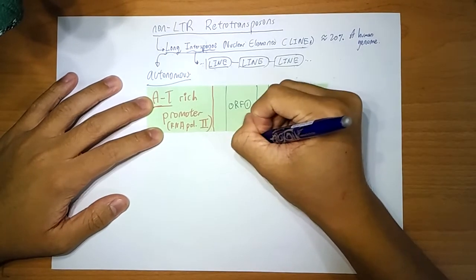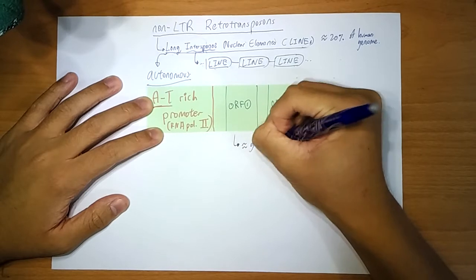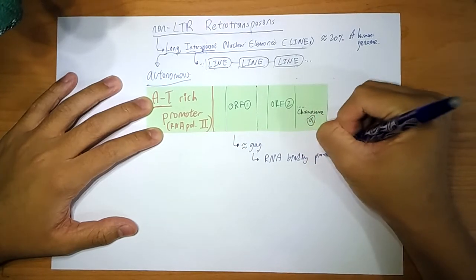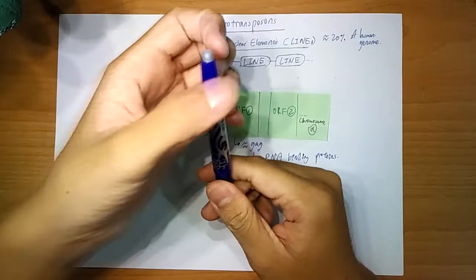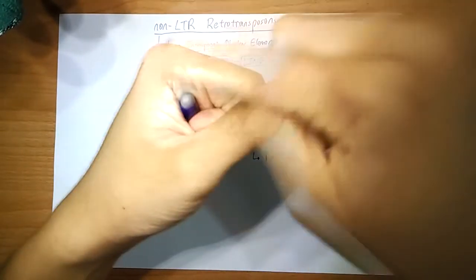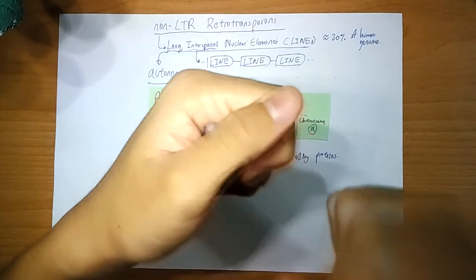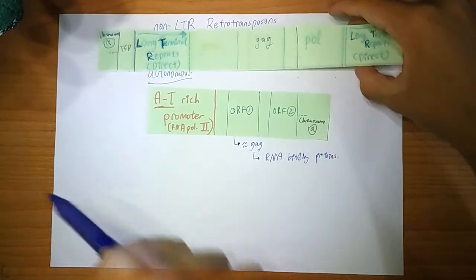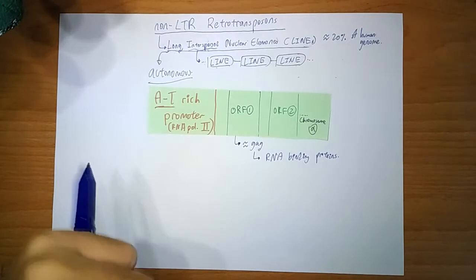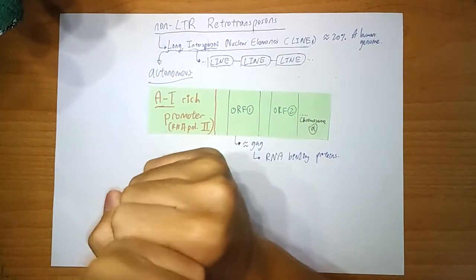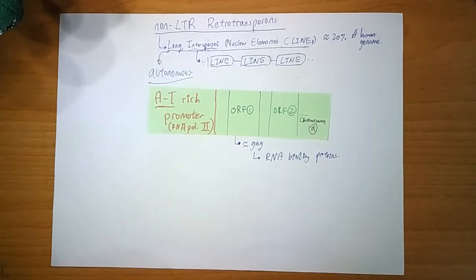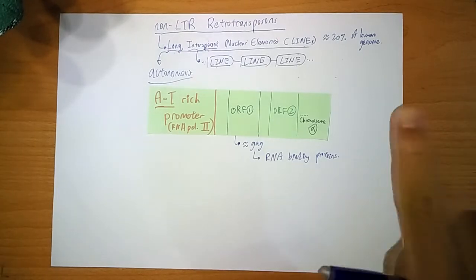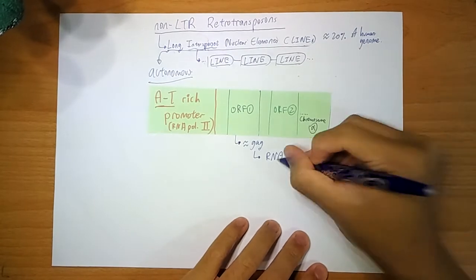So ORF is roughly the same as your GAC gene, in that it produces RNA binding proteins. So imagine this is your RNA, it will just bind onto it. And it will form like a capsid, sort of like your HIV, where you have a nucleocapsid. And remember, HIV is almost identical or related to this, and it's sort of the same as your GAC gene. So it will help to stabilize the RNA so that it doesn't just break down. Because RNA itself can be quite unstable because of the OH instead of the H in DNA. That's what RNA binding proteins are for.